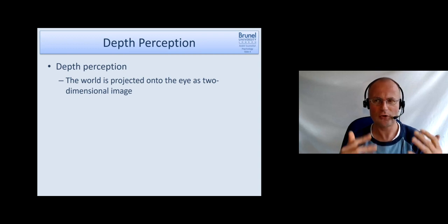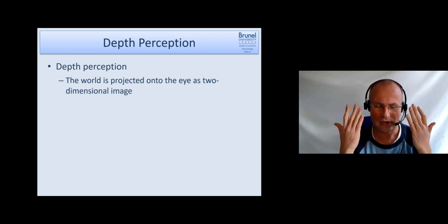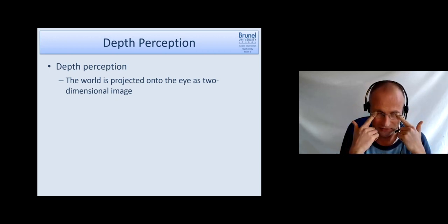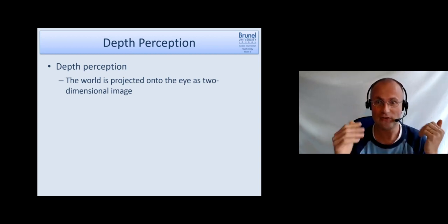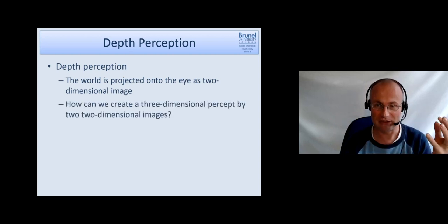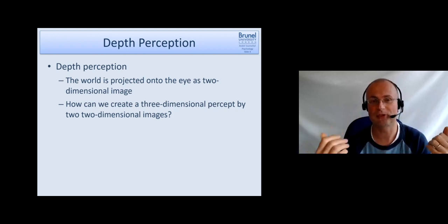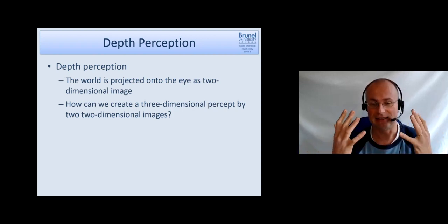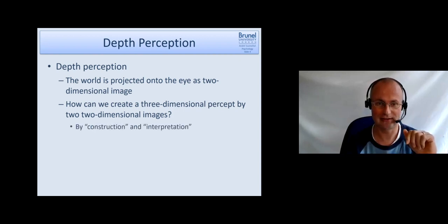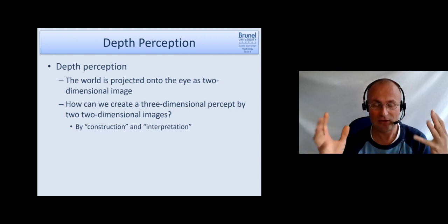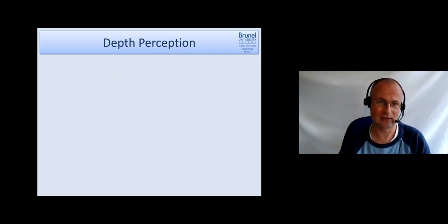When we want to do that, we have to be aware that this is actually a challenging task. Because what we have are two eyes and each eye gets a two-dimensional image. From these two-dimensional images we have to create a three-dimensional perception. In this part we will have a look at how our cognitive system is doing that. It's doing that in general by constructing things and interpreting things around us.